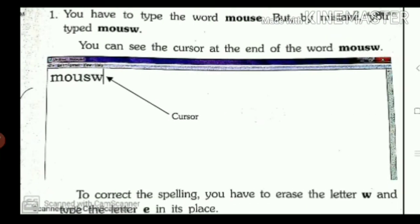For example, see it is given here. You have to type the word mouse. But by mistake, you type M-O-U-S-W. You can see the cursor at the end of the word M-O-U-S-W. We want to type the word mouse. M-O-U-S-E.